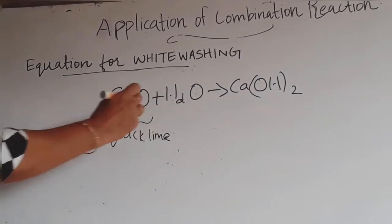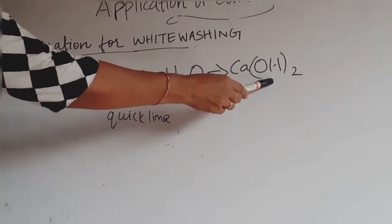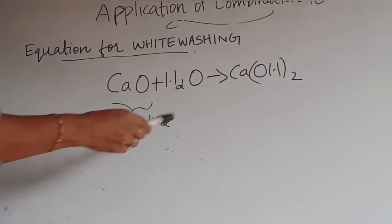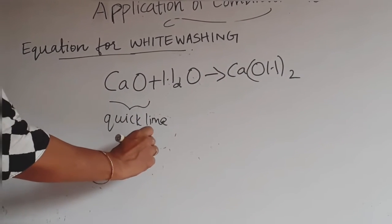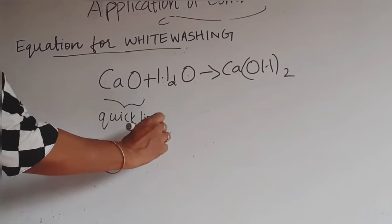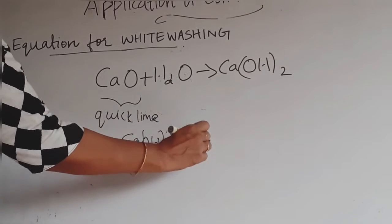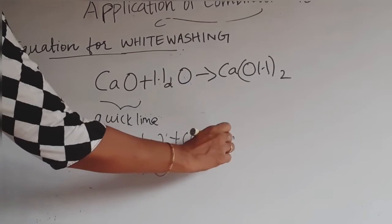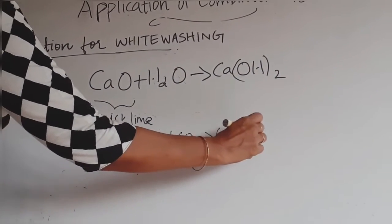When calcium oxide combines with water, we get calcium hydroxide. This is also known as slaked lime. When calcium hydroxide combines with carbon dioxide in the atmosphere, we get calcium carbonate, CaCO3 and H2O.